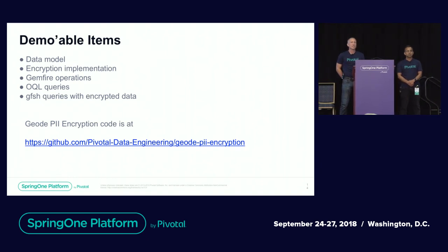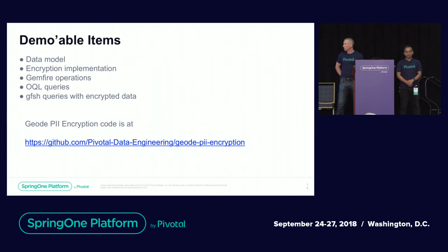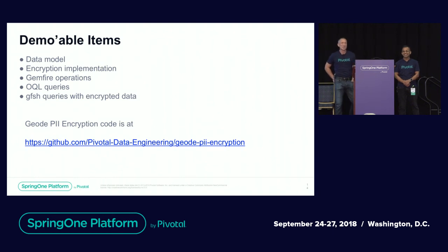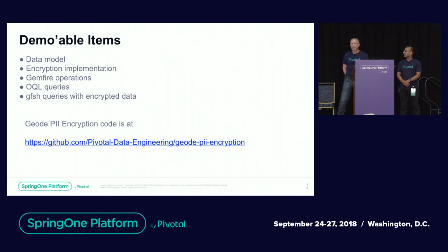The question is: could this become a configurable, productized option — for example, selecting common encryption methods through cache XML or properties configuration? That's something we're exploring. There's a lot more to think about in terms of a productized solution — we wouldn't want to force people to use the autoserializer. But it's getting a serious look right now and I'm hoping it gets productized to make it even easier to implement. Until then, we make this code available, and for certain applications it will be very useful.